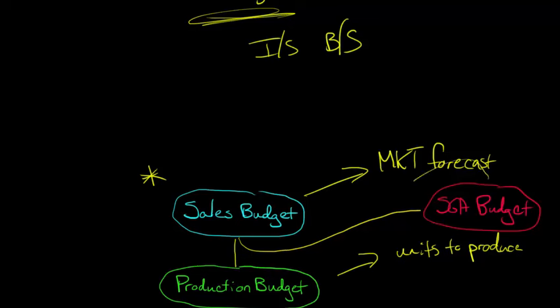Now let's think about this production budget. When we think about the production budget, we don't just need to know how many units we're going to sell during the period — we also need to know what we want to have in our ending inventory. We're going to have an ending inventory, and that's important because we don't just need the 500 units we're going to sell. Maybe we need an extra 200 for a buffer supply of inventory. So we'll also have an ending inventory budget.